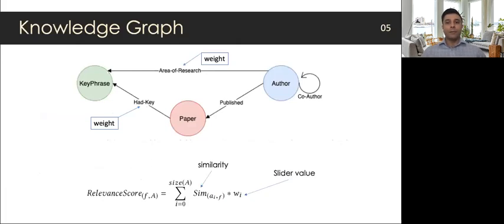Having all the key phrases extracted and weighted, we use a native graph database, Neo4j, to build a knowledge graph that captures all the available information in the dataset. The graph structure is very straightforward and presents the relationship between the key phrases, papers, and authors.